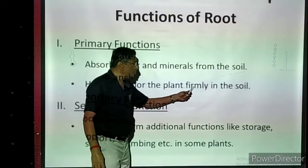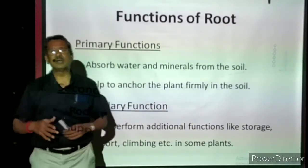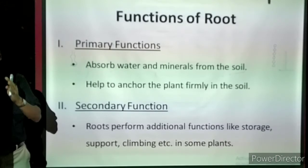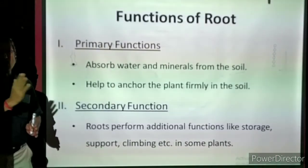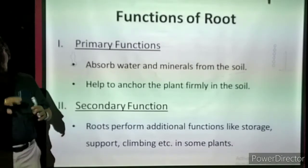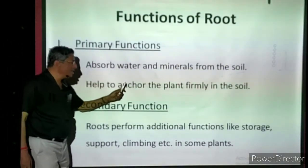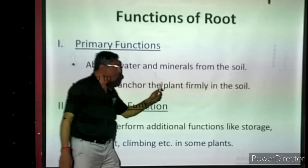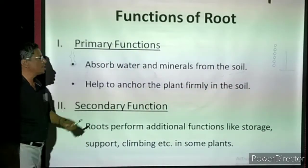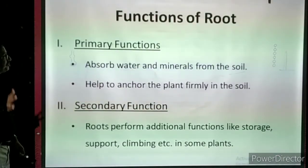The second primary function is that roots help to anchor the plant firmly in the soil. A big tall tree standing vertically — even if wind blows faster it moves but never falls down — because the roots are firmly fixed in the soil. So fixation and absorption of water and minerals are the two major primary functions of roots.